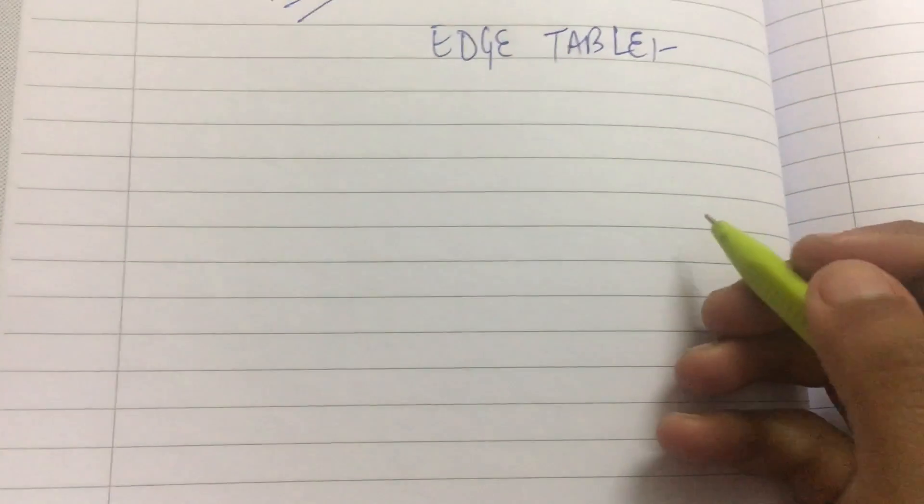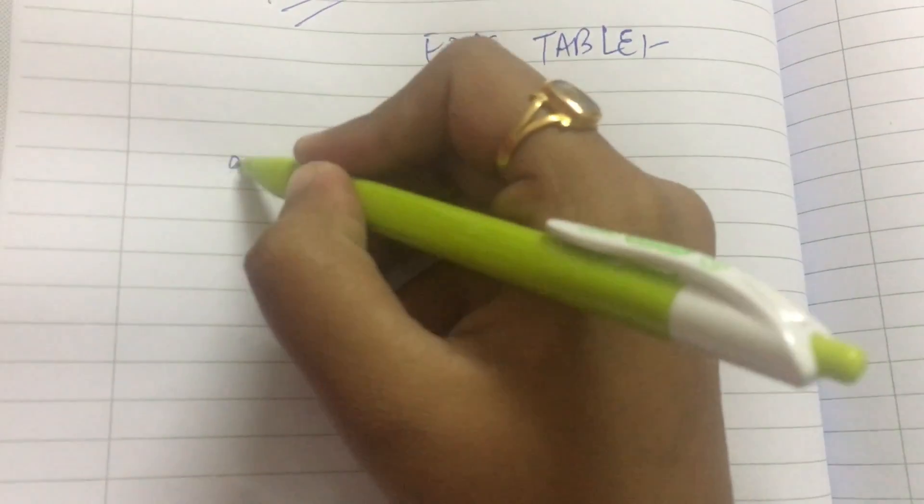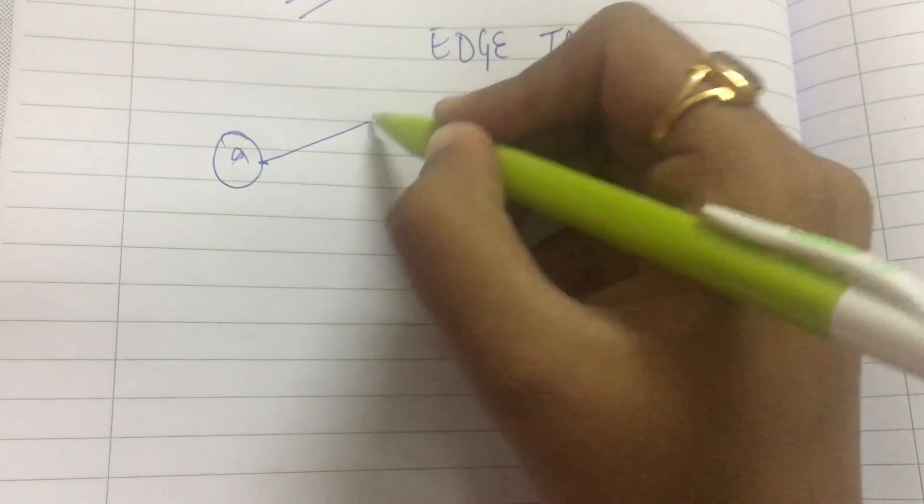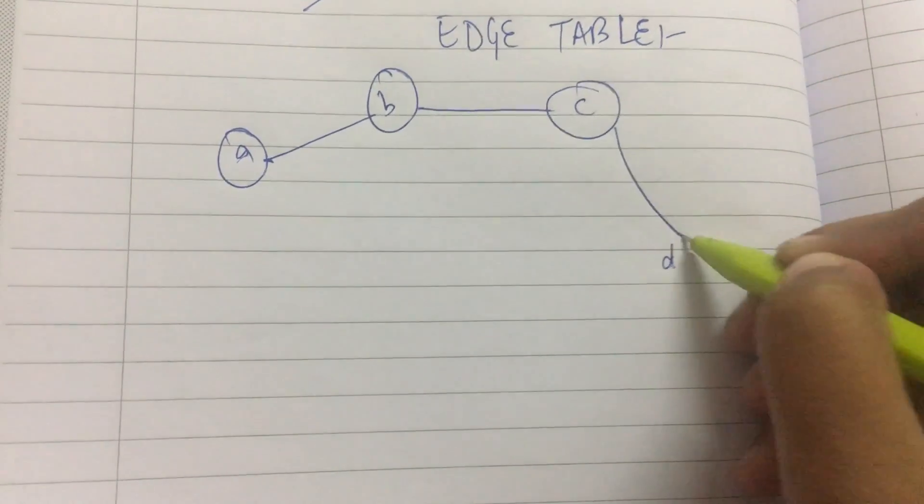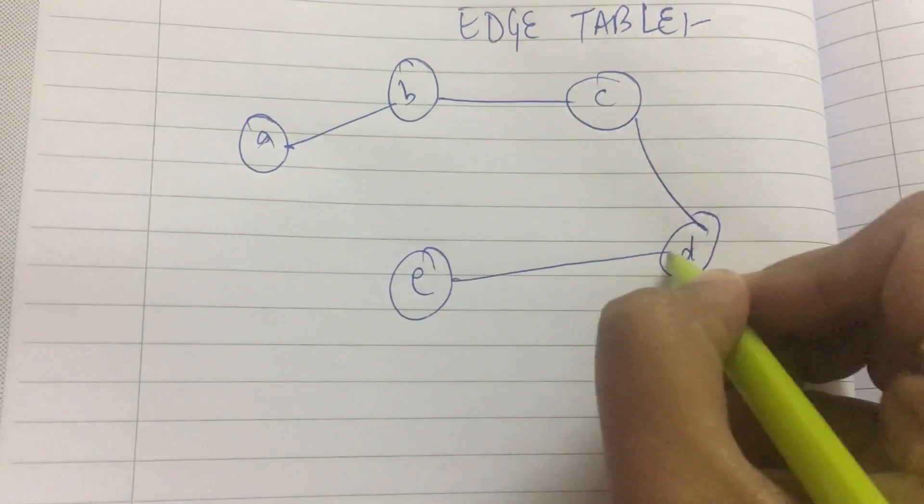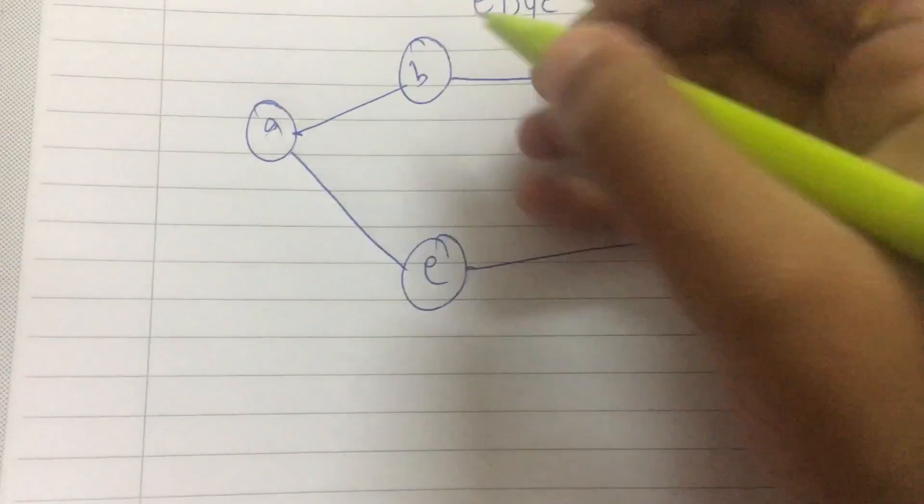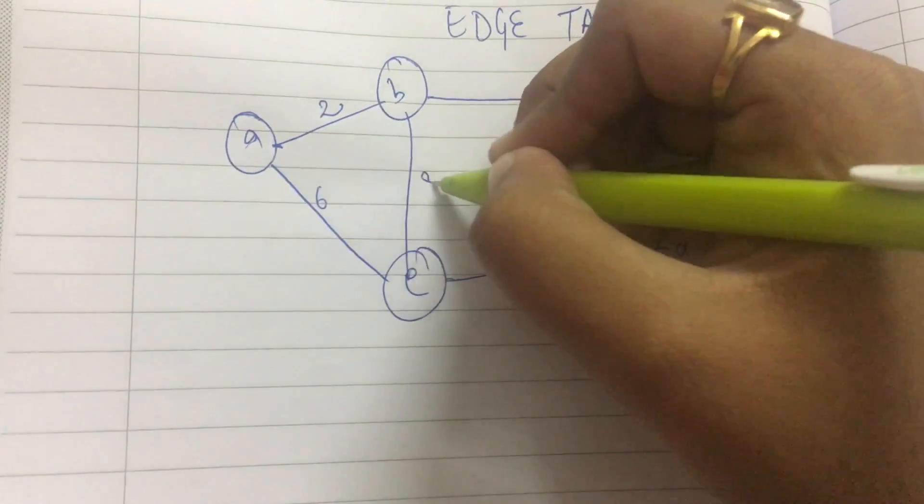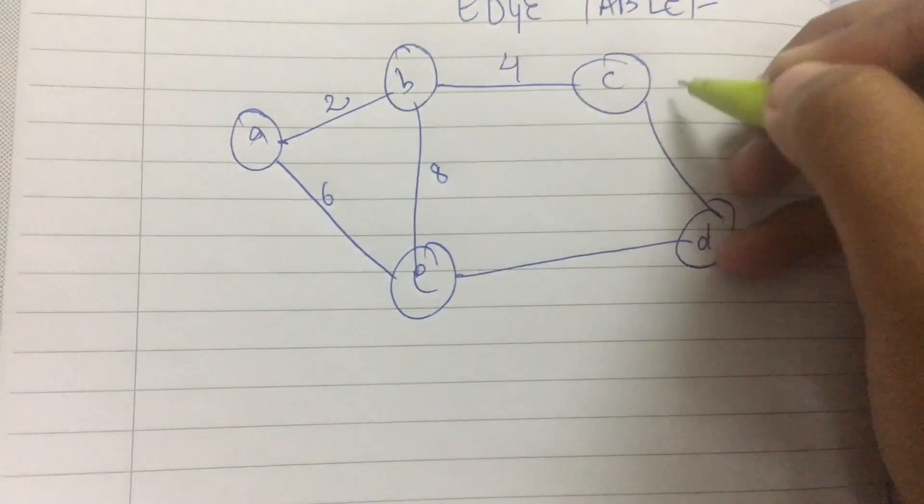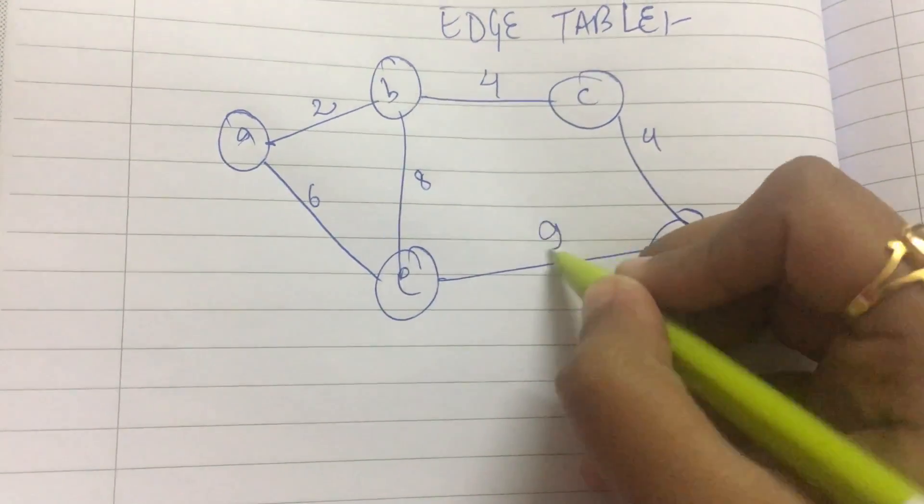So let us see an example. I'm taking a short small example. It's a very easy method, nothing very difficult in it. Say, then 4, 4, and 9.